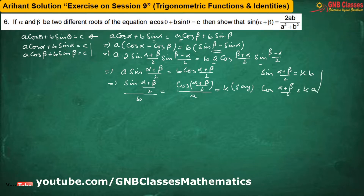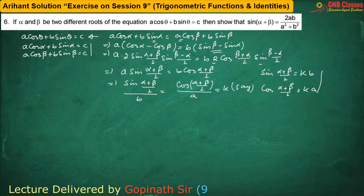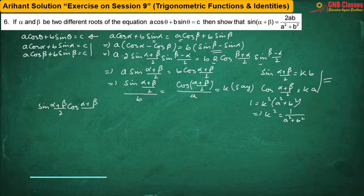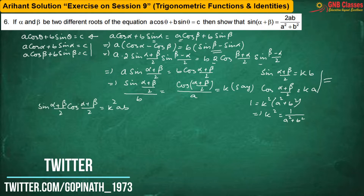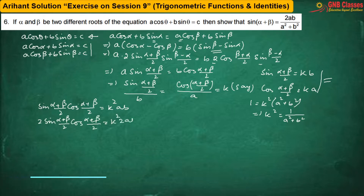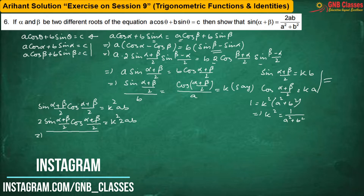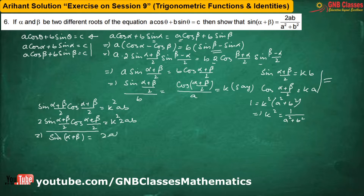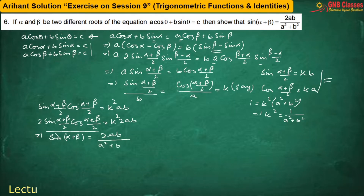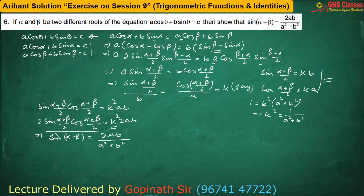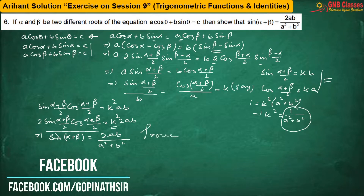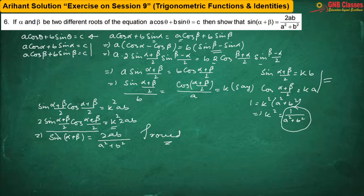Now I am squaring and adding the corresponding sides of these two equations. So k² = 1/(a² + b²). From these two equations, multiplying by 2 on both sides, this is the formula of sin2θ, giving sin(α + β) = 2ab/(a² + b²), since k² is replaced by 1/(a² + b²).